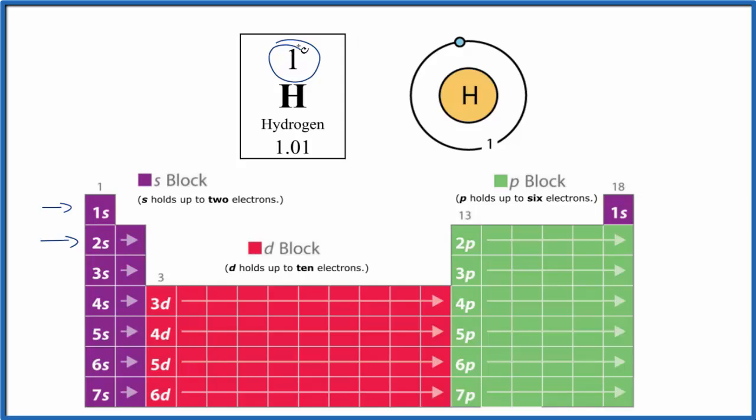So hydrogen only has one electron, because it has one proton and it's neutral. Here's hydrogen right here on the periodic table. So we have one electron, it's in the first energy level here. So we just put it right here in this first energy level around the hydrogen nucleus.